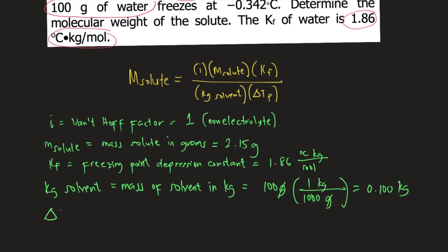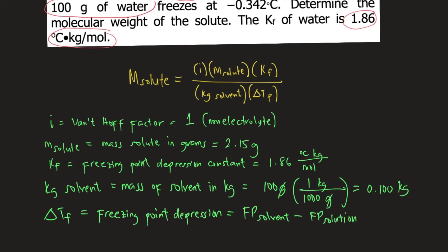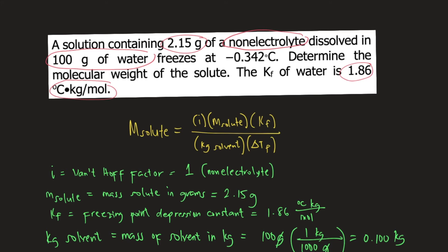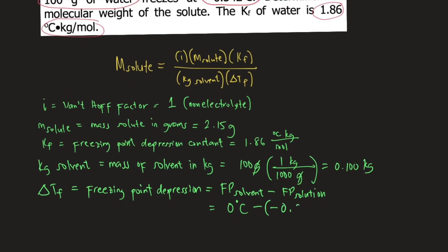Delta Tf is the freezing point depression, equal to the freezing point of the solvent minus the freezing point of the solution. The solvent is water, and the freezing point of water is 0 degrees Celsius. The problem states the freezing point of the solution is negative 0.342 degrees Celsius. So delta Tf equals 0 minus negative 0.342, which equals 0.342 degrees Celsius.